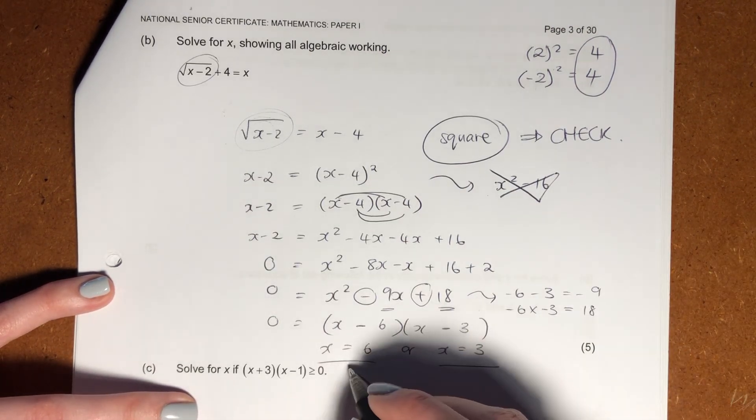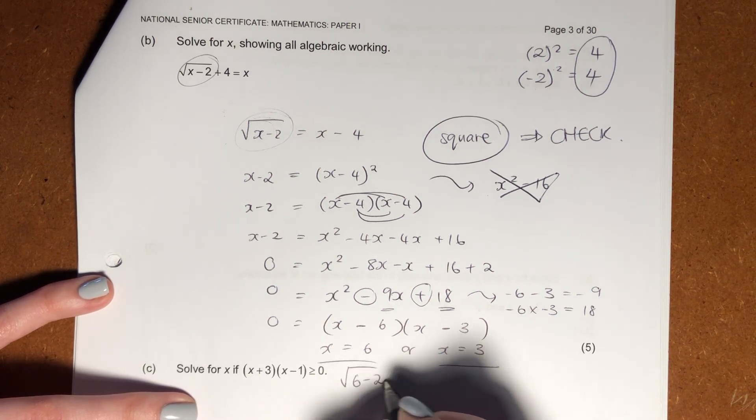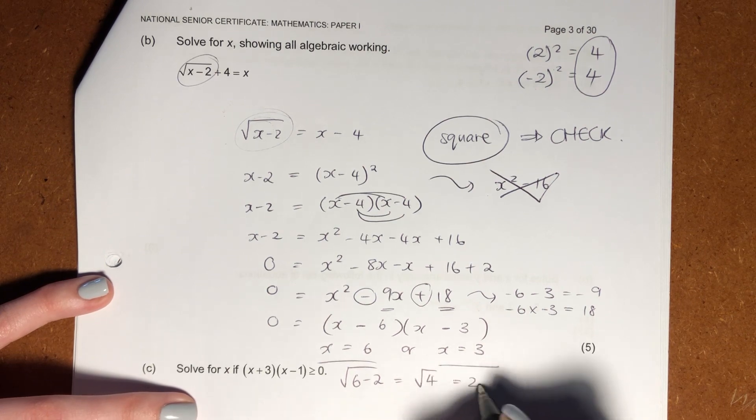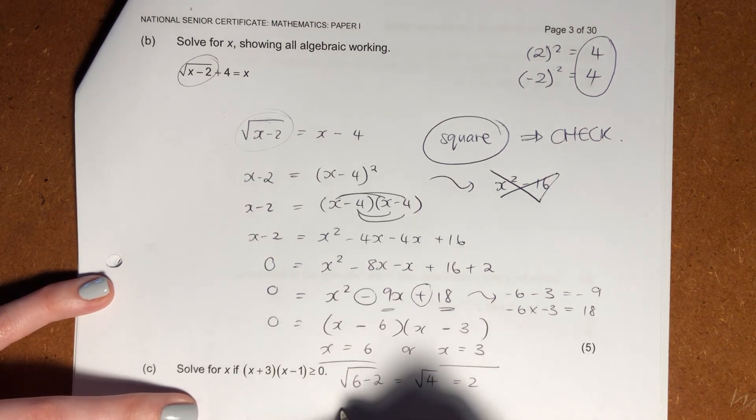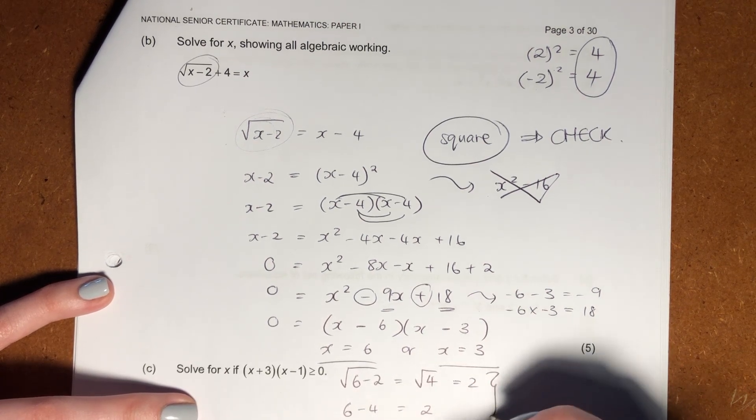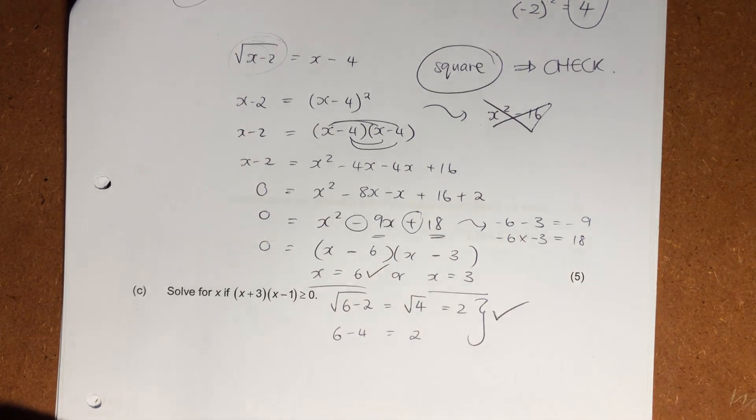So let's go check 6. If I say 6 minus 2, it gives me the root of 4, which gives me 2. So check that side. Let me say, well, what is 6 minus 4, then? It equals 2. Do you see that these two equal? Therefore, you are fine. 6 is one of our solutions.